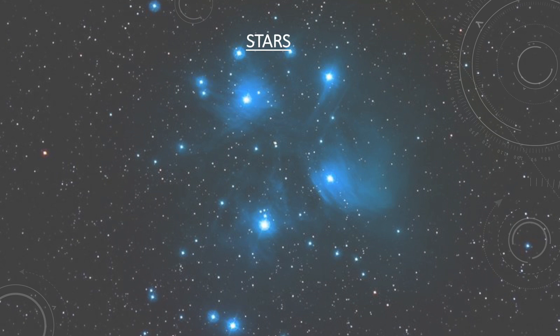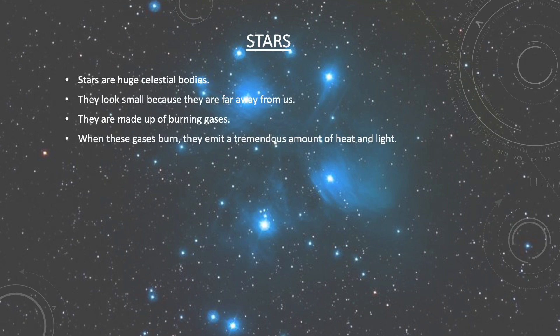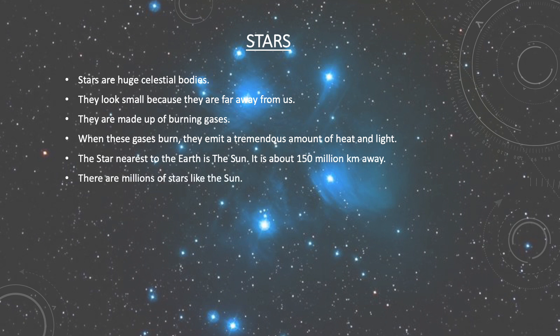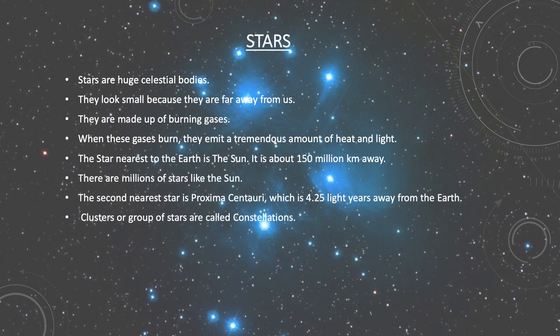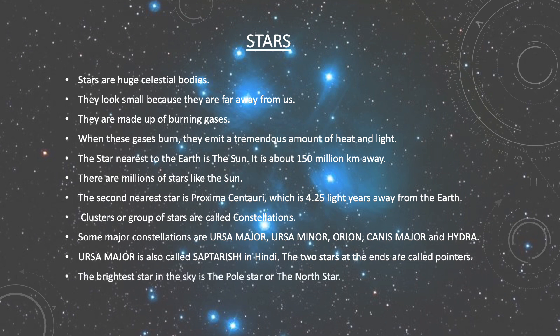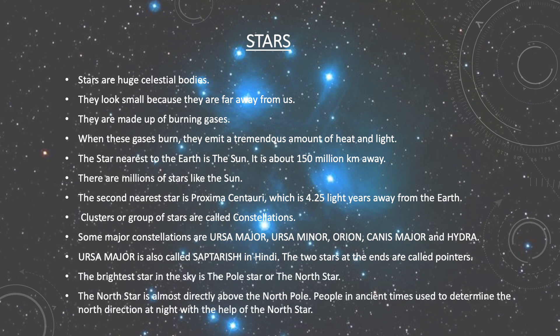Now let us talk about stars. Stars are huge celestial bodies. They look small because they are far away from us. Keeping the size of the Sun in mind, they are actually very huge but appear small to us. They are made up of burning gases. When these gases burn, they emit a tremendous amount of heat and light.